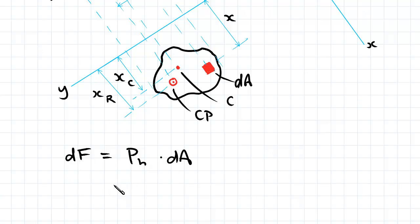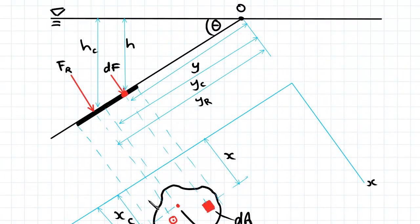We know from previous videos that P equals P0 plus rho gH. P0 in this case would be the atmospheric pressure. However, we do not consider it in hydrostatic forces on submerged surfaces because it cancels out. So the atmospheric pressure is applied on both sides of the fluid, so they in fact cancel out.